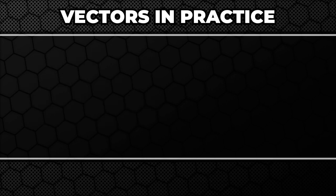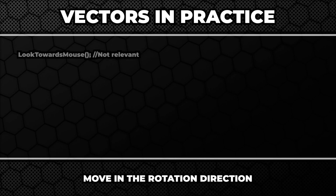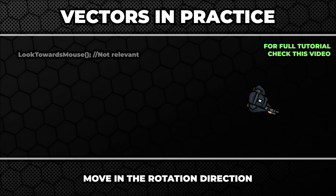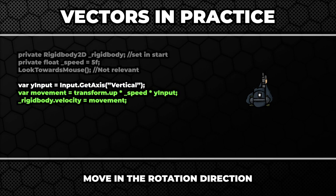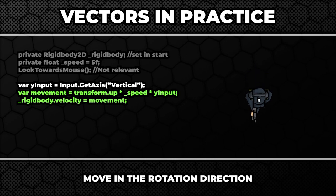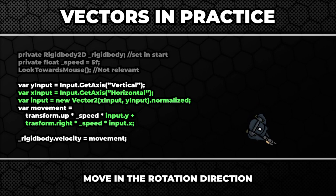Now let's have a look at a typical top-down shooter scenario. We make our character always look at the mouse position. For simplicity let's assume we only gather the vertical input — when pressing the up arrow key we want the character to move forward. When not rotated, our character is looking up, so we simply multiply transform.up by the speed and by the input. The horizontal movement could be handled exactly the same way, just using transform.right instead of transform.up.